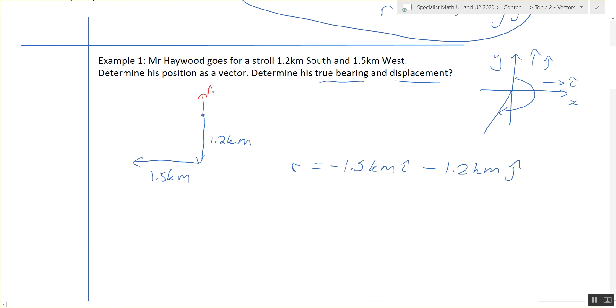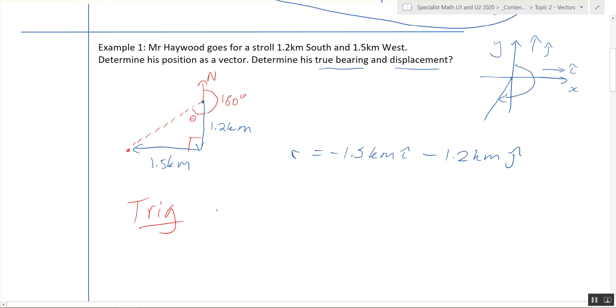This is north, and we're going to my end point here. So we have to find this angle here. Let's label it theta. To get the true bearing, I add theta to 180 degrees. Trig to find the angle, Pythagorean theorem to find the length, the hypotenuse.